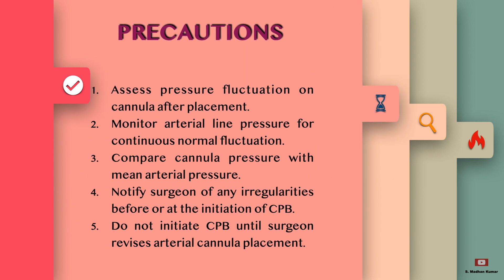It can be prevented by taking precautions such as assessing pressure fluctuation on the cannula after placement, monitoring arterial line pressure for continuous normal fluctuations, comparing the cannula pressure with the mean arterial pressure of the patient, and notifying the surgeons of any irregularities before or at the initiation of CPB.